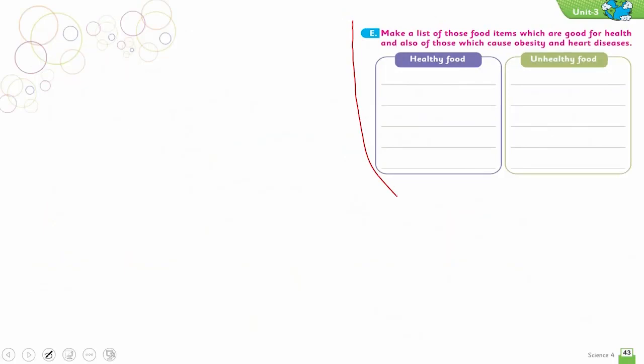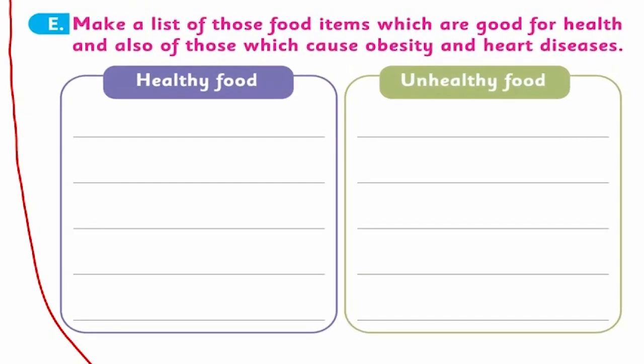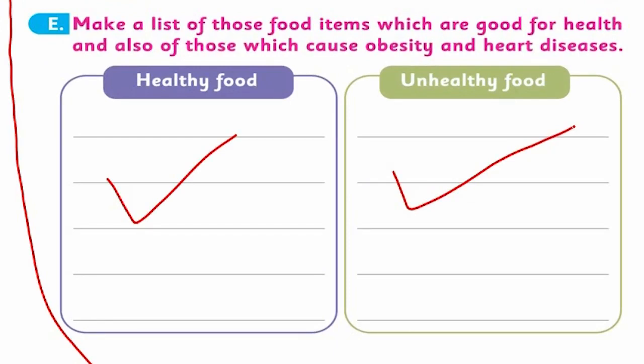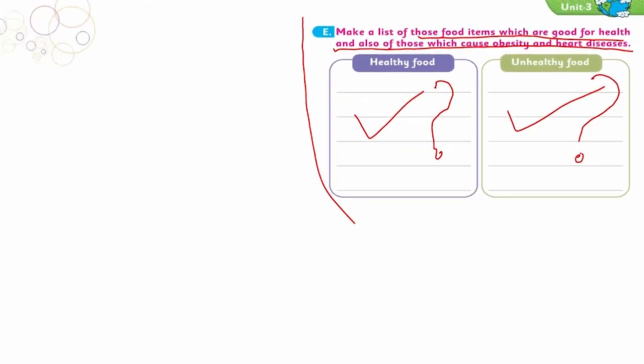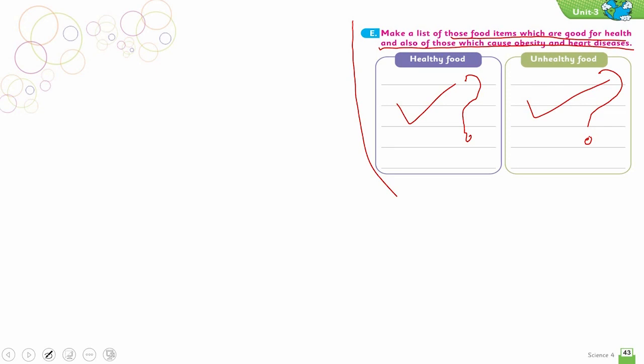There is one activity. You can do it on this paper also. You can use extra paper for this. Make a list of those food items which are good for health and also those which cause obesity and heart disease. So which is healthy food, which is unhealthy food. Look in your surrounding environment. Look in your routine. When you eat too many noodles, when you take fizzy drinks, when you take unhealthy food, then what will happen? That will be unhealthy food. It's much better that you eat home cooking. Ask your mother to make it for you. Stay healthy and stay happy.